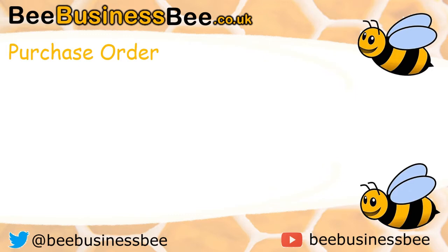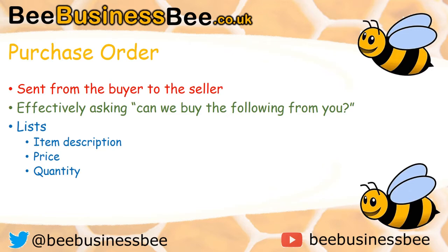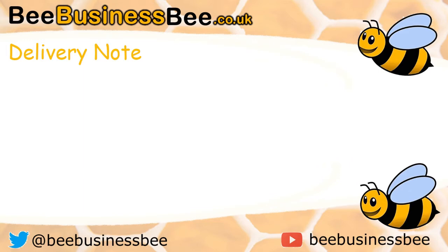A purchase order is sent from the buyer to the seller, effectively asking: can we buy the following items from you? It will list the items they want to buy, the price they want to pay — normally from a catalogue or the company's website — and the quantity they want to purchase. This is actually a legal document; effectively it's a contract saying we want to buy from you.